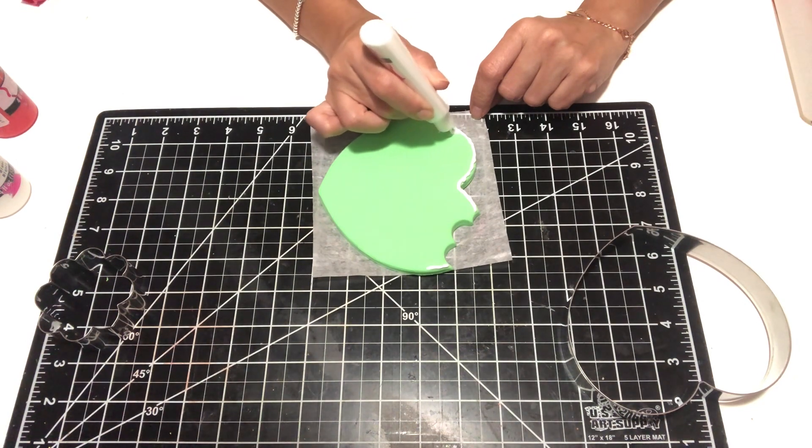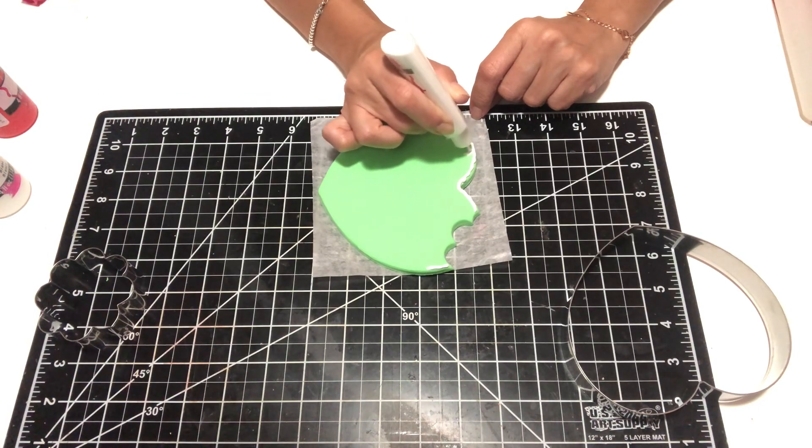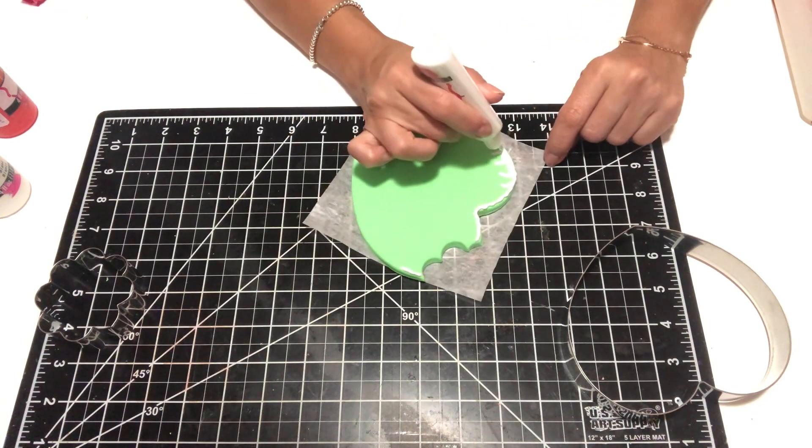Once my heart is a little drier, then I am going to go in and add my wooden lollipop stick. Now, to me the stick looked too plain so I wanted to dress it up a little bit.